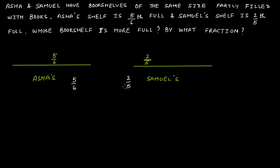The way to make like fractions — the first step is always to find the LCM of 6 and 5. I'm leaving this as your homework; just pause the video and try it. You will find it is 30. The LCM of 6 and 5 is 30. We have already discussed how to find the LCM — use that method.